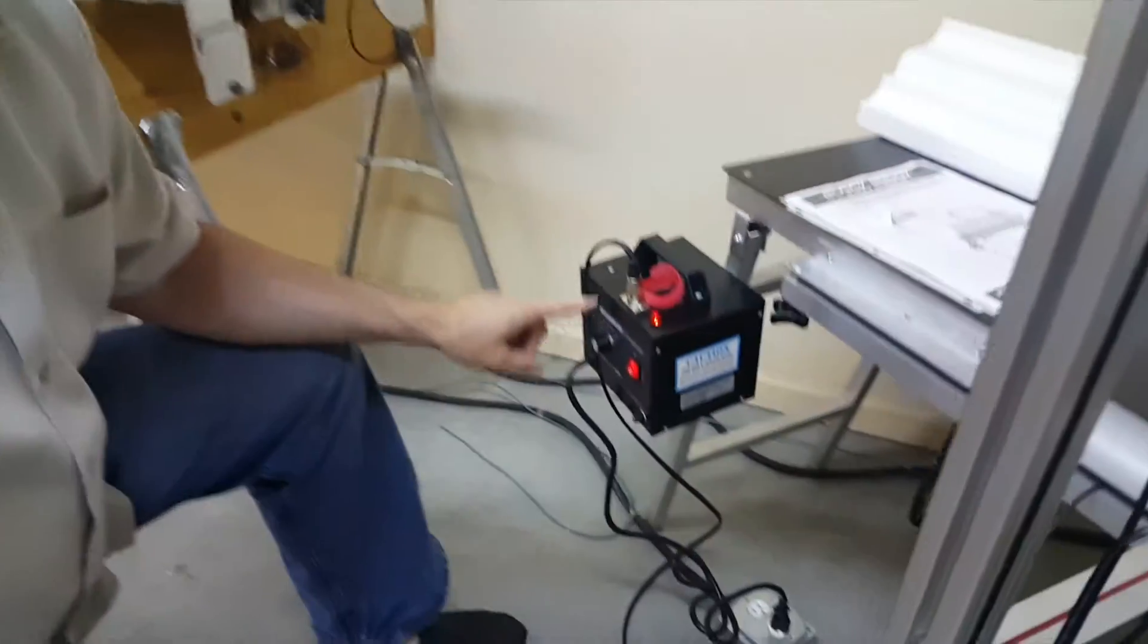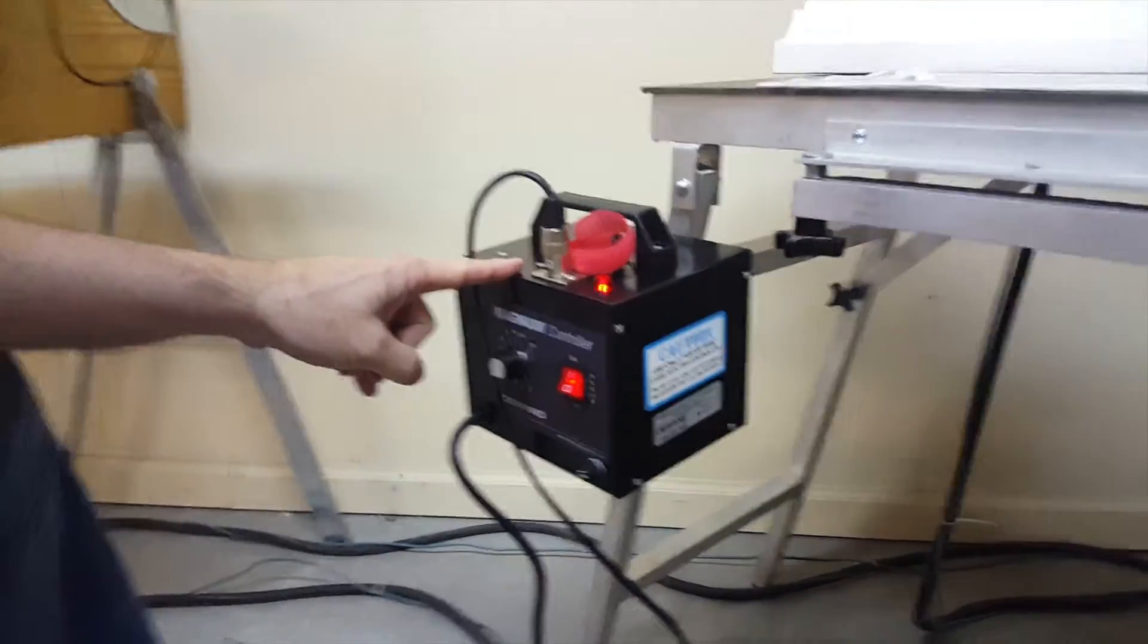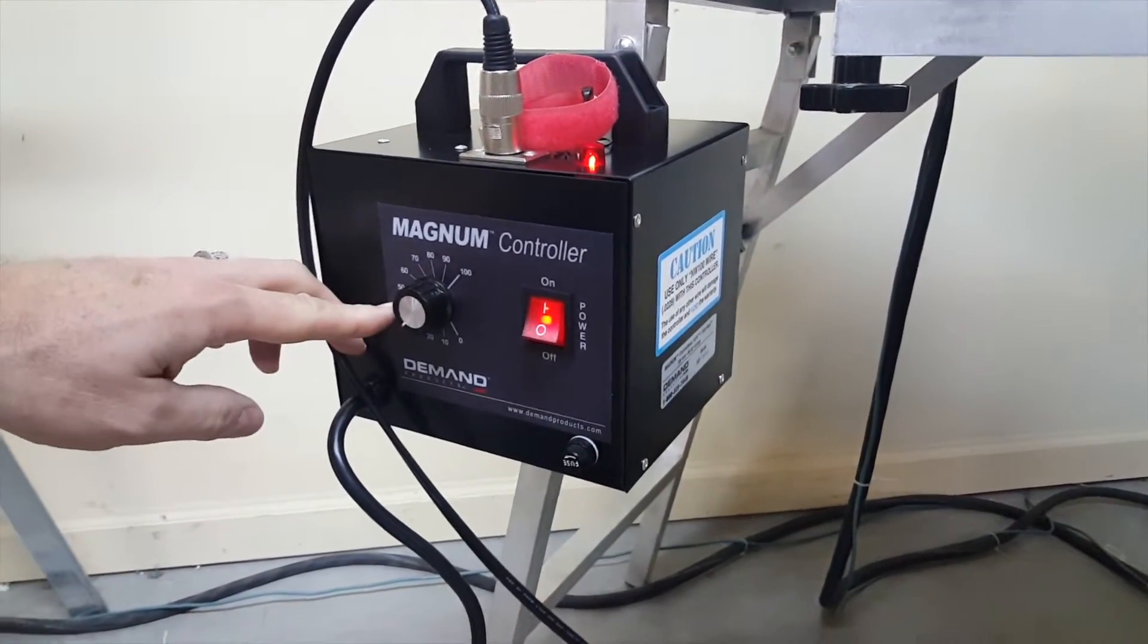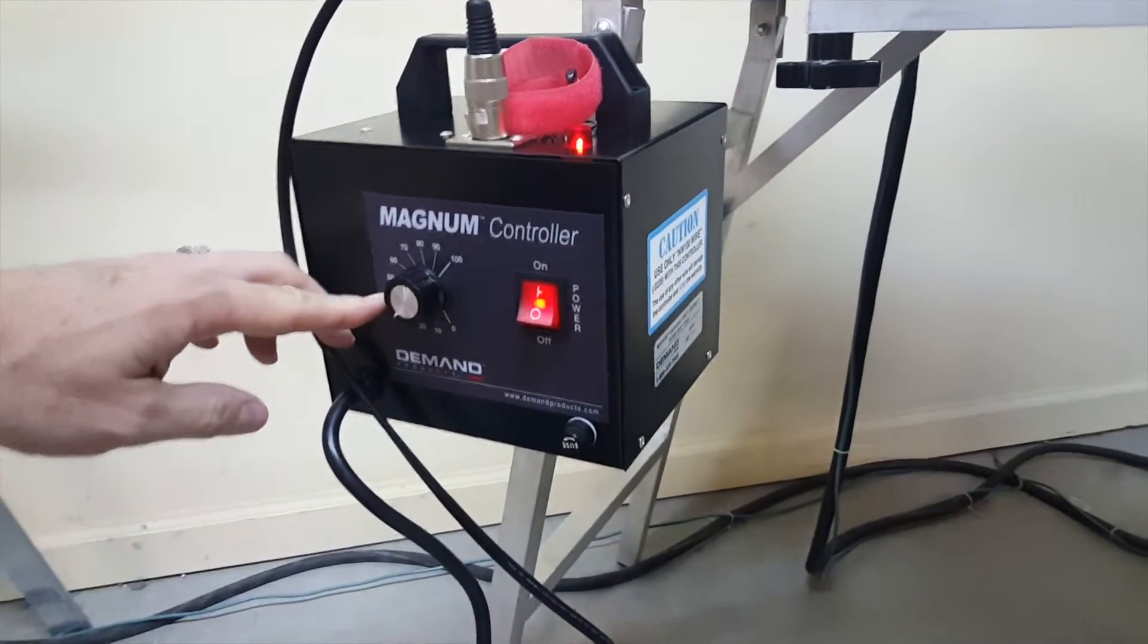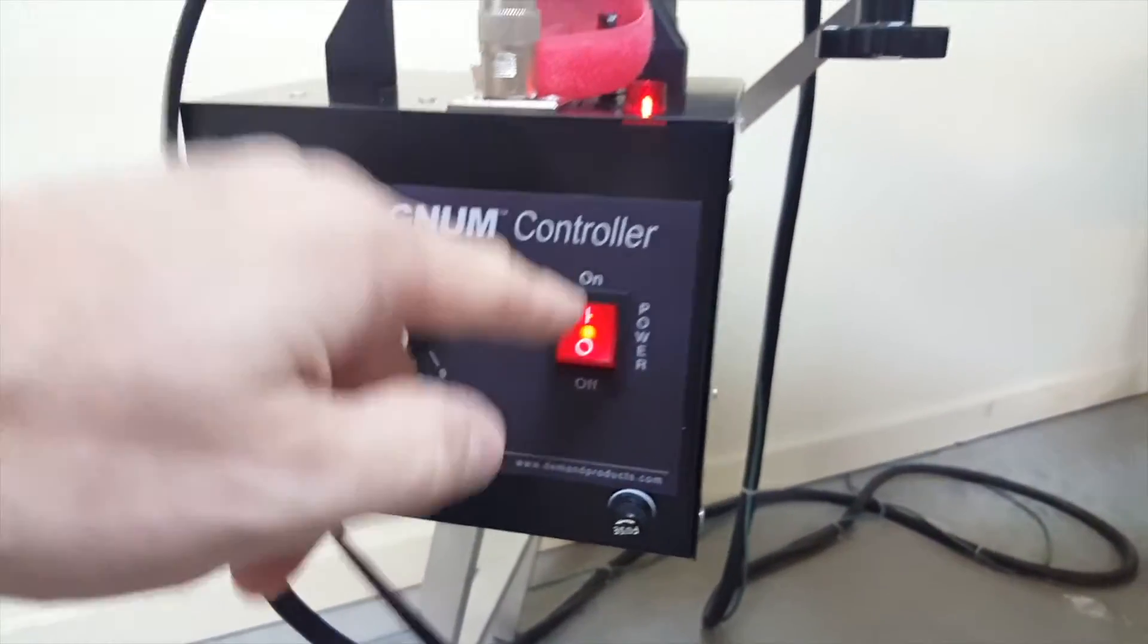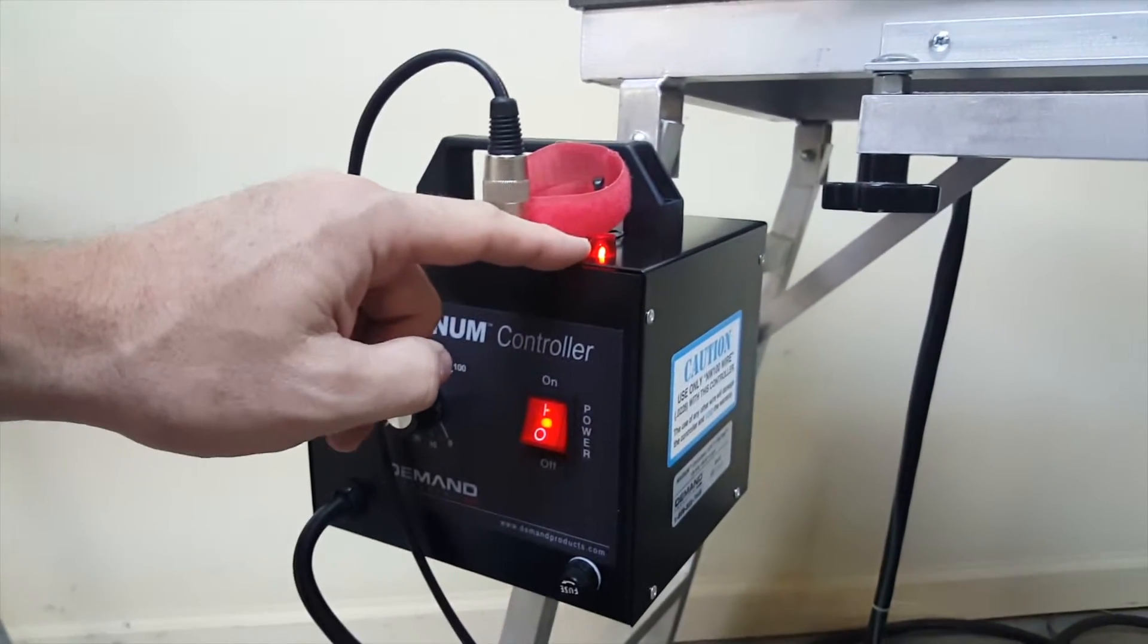All right, so I've got a brand new out-of-the-box Magnum controller. You can see that the dial is a little bit different than the one you have. This is the latest version of controller. You've got the power and you've got the power indicator light.